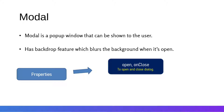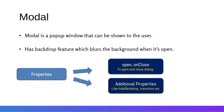The properties are almost the same for the modal and the dialog box. We have the 'open' prop — whenever it's true, the modal will be open. We have the 'onClose' property, so whenever we click outside of the modal, the modal will be closed. We also have additional properties like 'hideBackdrop' to hide the backdrop blur, and 'transition' to add animations onto the modal.